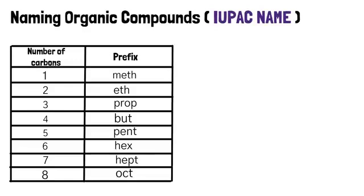Let's go through them one more time: one is meth, two is eth, three is prop, four is but, five is pent, six is hex, seven is hept, eight is oct. Again, I repeat, this is very important.